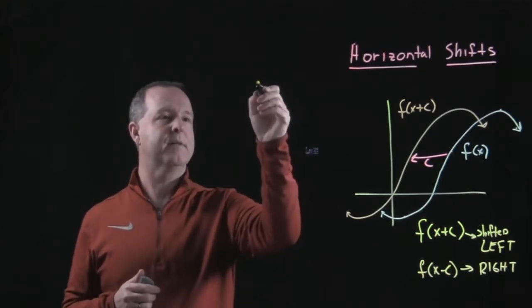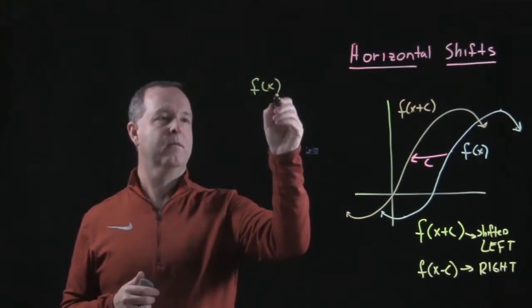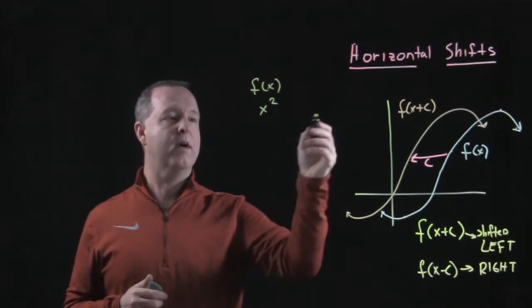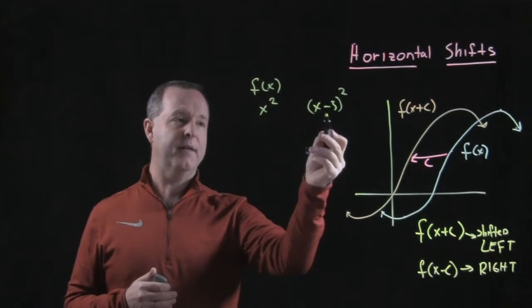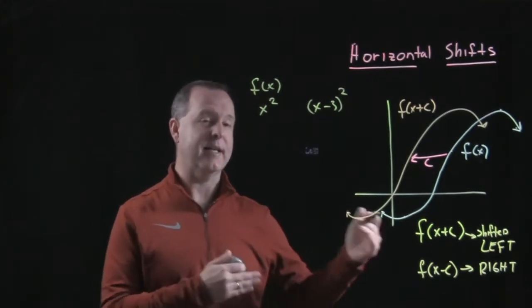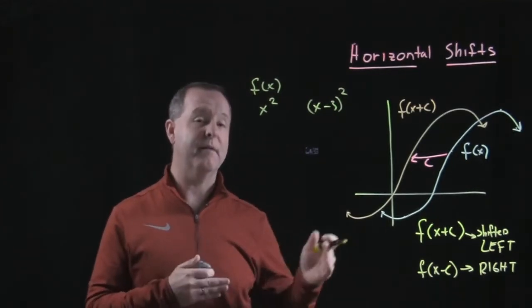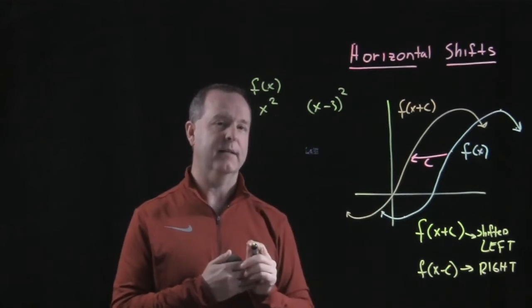Let's imagine that I have f of x equals x squared, and I want to compare that to x minus 3 squared. Now this is a constant that I'm subtracting from the function, which should move it to the right.